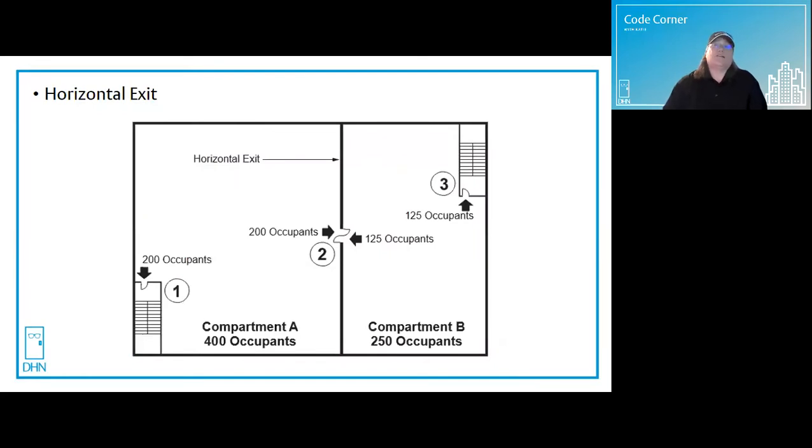A horizontal exit is an exit component consisting of fire resistance rated walls, floors and ceilings, and fire rated door openings. It is intended to compartmentalize portions of a large building into smaller compartments of no more than 22,500 square feet, thereby creating refuge areas that afford safety from the fire and smoke from the area of fire origin. We have a horizontal exit on the screen. It's that double egress door in that fire barrier. And it separates compartment A from compartment B.